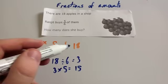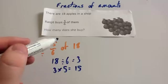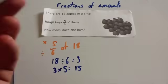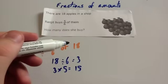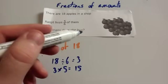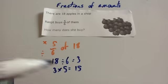So 5 sixths of 18 is 15. So Ranjit buys 15 apples and she leaves 3 in the shop because there's 18. She's bought 15, so there'll be 3 left over. But the question is, how many did she buy? So the answer would be 15.